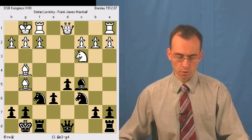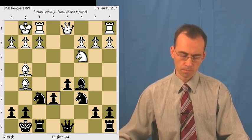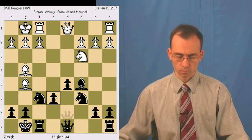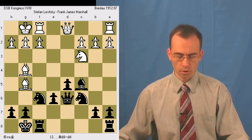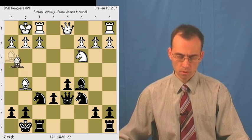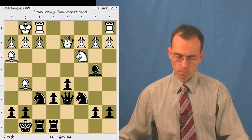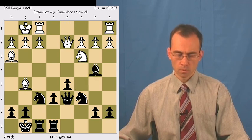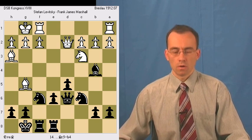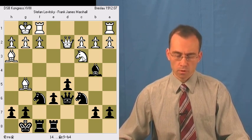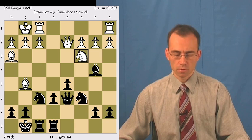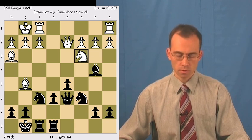So here white puts pressure on e6 pawn. Black plays Qd6. So here black puts kind of pins this knight on c3.